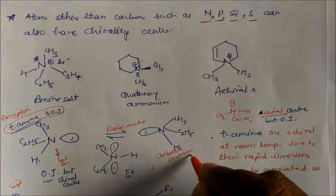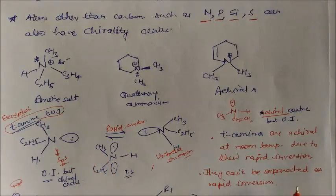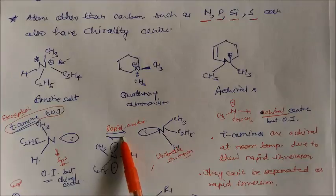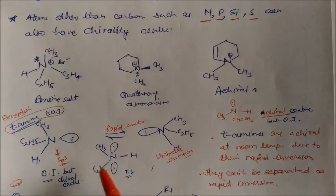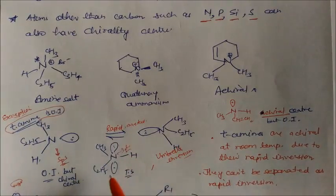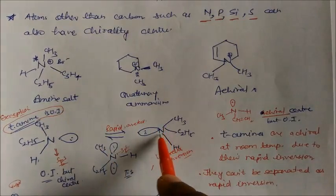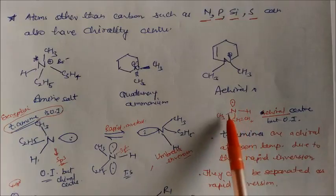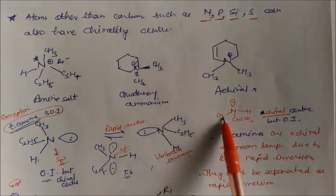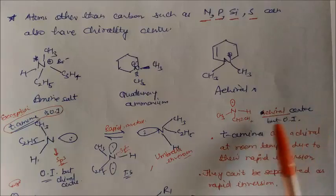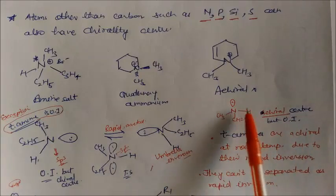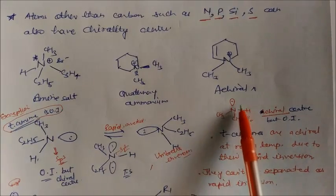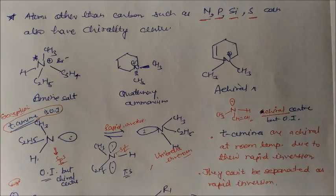One more important thing: these two compounds cannot be separated due to rapid inversion. At the transition state, the nitrogen attains an sp2 shape — this is the sp2 shape. Then it goes back. Now, here also this compound is chiral. You can see why — this is exceptions one, two, three. This is chiral but optically inactive. Because in this case, inversion will not take place. We will see some more cases where nitrogen has exceptions.